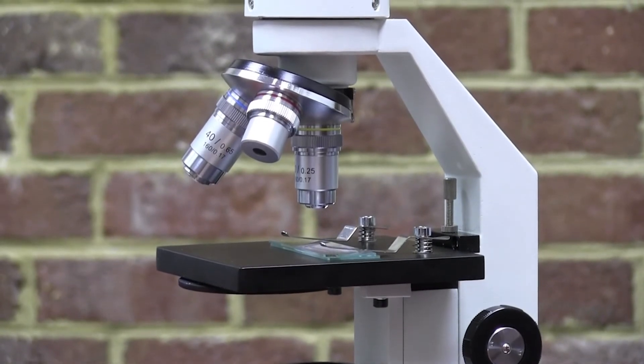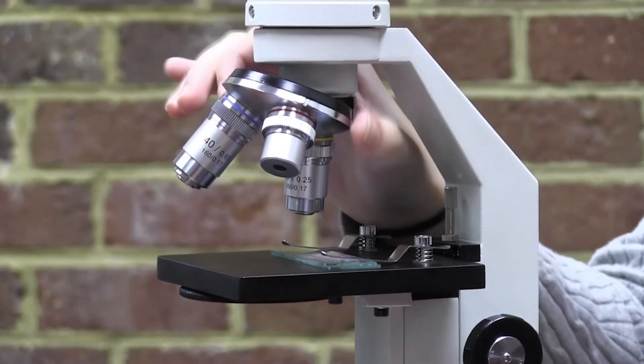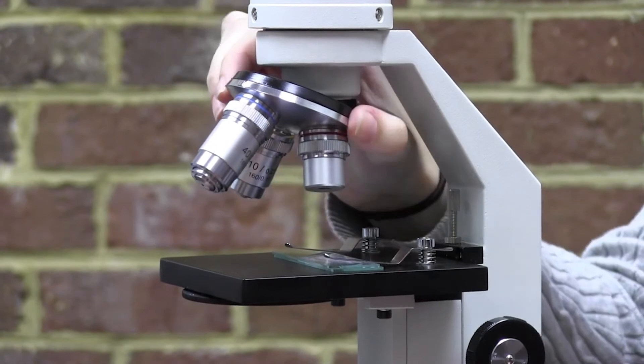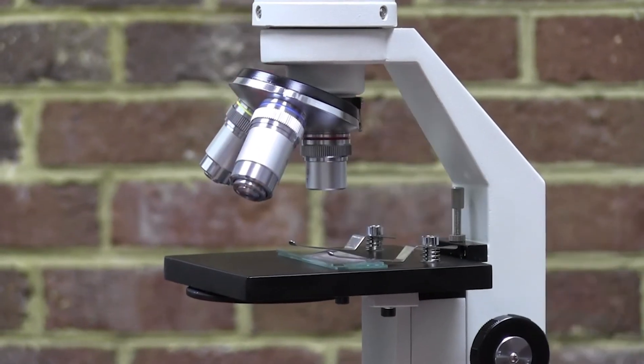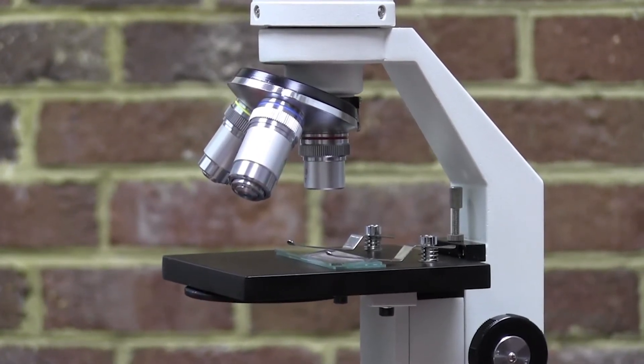Rotate the nose piece until the objective lens you want to use is directly over the slide. The lowest magnification lens is often used when you begin to view a new slide.